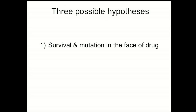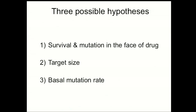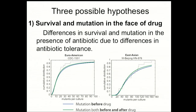The question then becomes: what are those biologic differences? We came up with three hypotheses. The first is that strains may be able to survive and mutate in the presence of drug, giving the appearance of a faster drug resistance rate. The second is a target size hypothesis: if East Asian strains could acquire 100 RPOB mutations conferring RIF resistance compared to only 10 for Euro-American strains, that would give a tenfold advantage. Our third hypothesis is basal mutation rate — since drug resistance in TB is chromosomally encoded, a faster mutation rate would allow strains to acquire drug resistance faster.